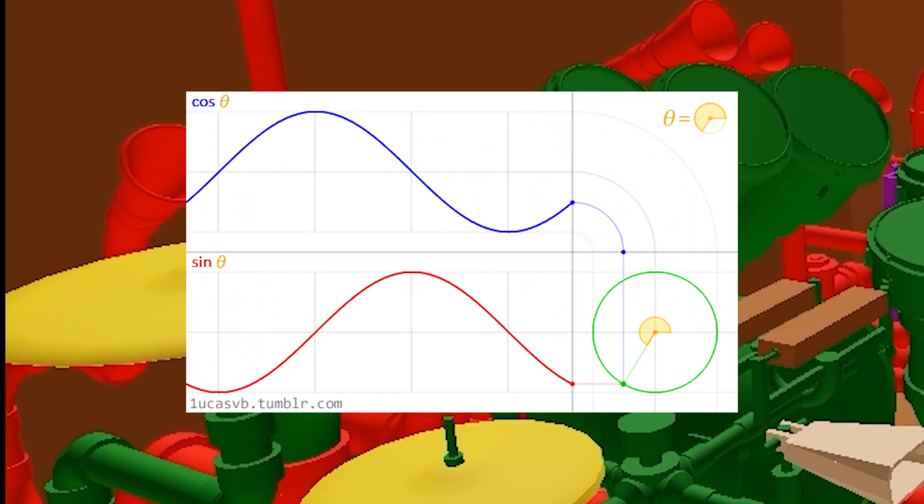The idea coming from my knowledge that two waves offset by 90 degrees describe circular movement, so I tried this with two axes of the cymbals, and it worked really well.